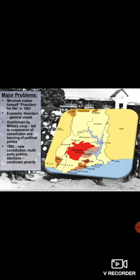Major problems faced by Nkrumah were: first, he tried to introduce industrialization very quickly. For this, he borrowed huge amounts of capital from abroad, hoping to balance the budget from increased exports.